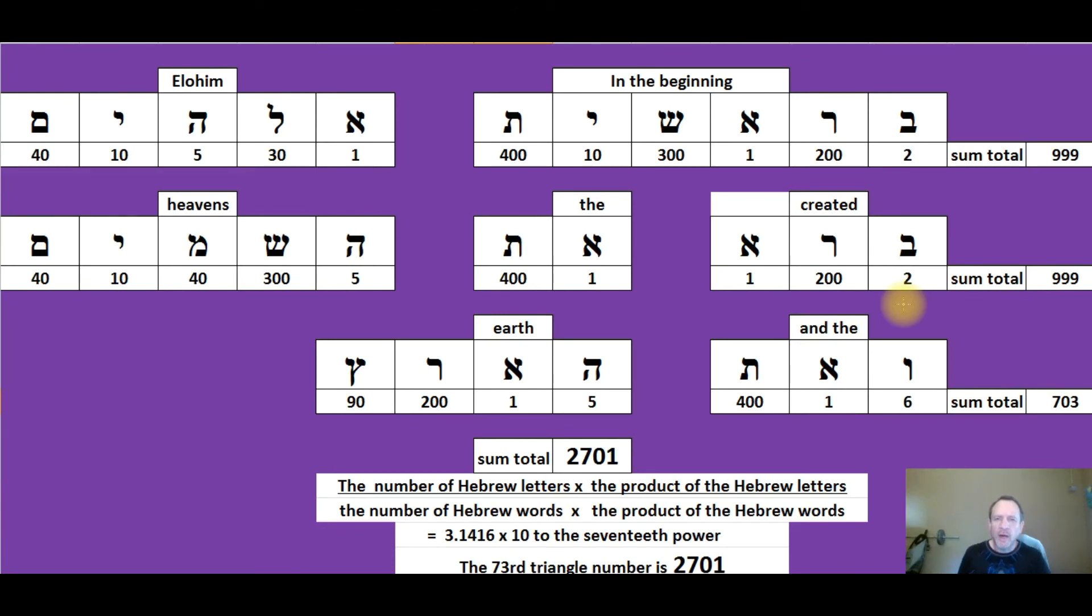Here are some examples of how the Lord uses the Hebrew and Greek marriage of number and geometry to show a divine order. The Hebrew letters that create Genesis 1 verse 1 have a sum total Hebrew gematria value of 2,701. This is the 73rd star number.